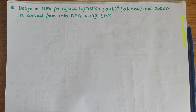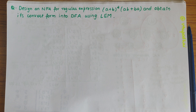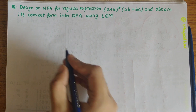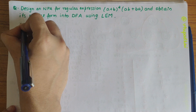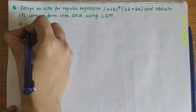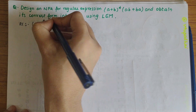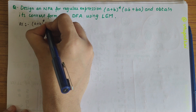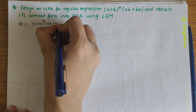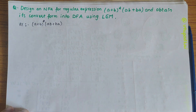In this video we will be looking into designing an NFA from a given regular expression and obtaining its converted form into DFA using the lazy evaluation method. The regular expression given is (A plus B)* into AB plus BA.